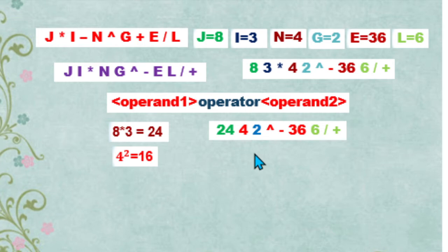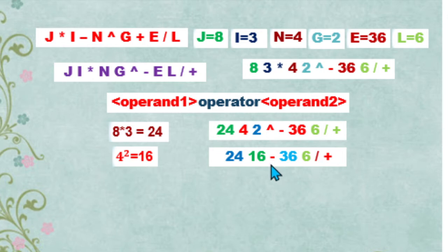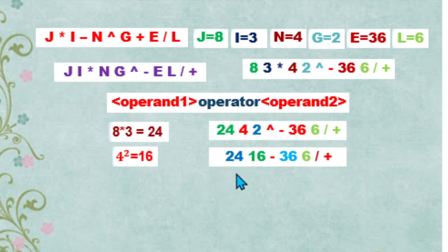Our expression now is 24, 16. After performing exponentiation, we now have 16 as the obtained value, then the subtraction operator, 36, 6, division operator, and addition operator.